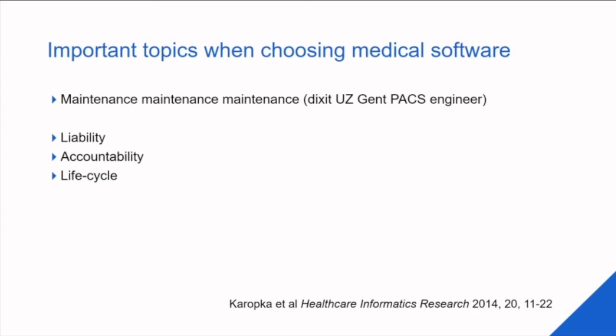The same holds for accountability. One very important point is also the life cycle of your software. With open source, there may not be a stable life cycle. We know that if we have a stable system within our hospital it will remain stable, and if you get an update it's tested and validated — and you can go to the company if something is wrong, within a specified timeframe.